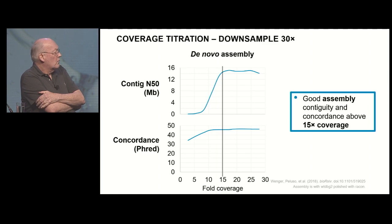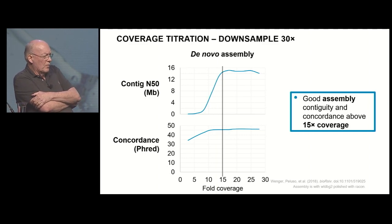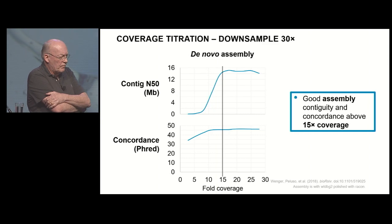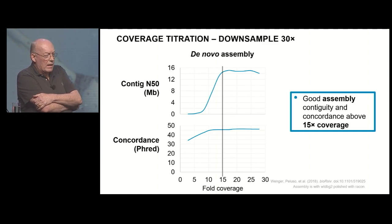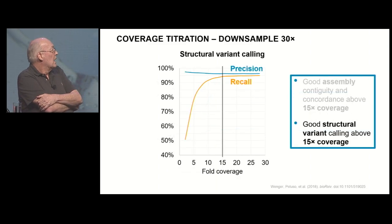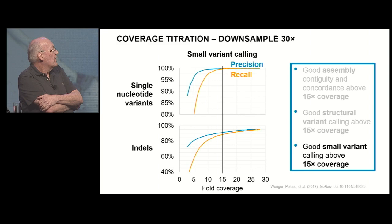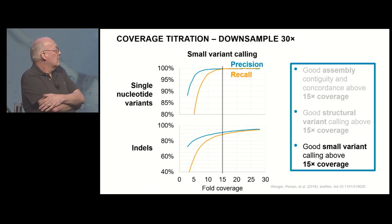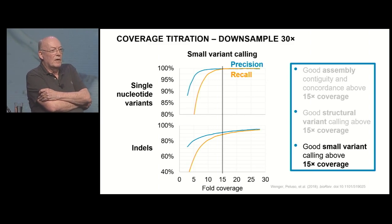We also looked at how much coverage you need to do all this, and I'll go through these quickly because they all wind up being about the same from a perspective of concordance and contiguity. You get to where you need to be pretty well at about 15 or 16x unique coverage. For structural variants it's about the same thing. For small variant calling it's certainly the same for single nucleotides, and as we continue to process it we think it'll get there for indels as well — consistent with what Smith-Waterman prediction would suggest if you get good random generation of DNA in your experiments.